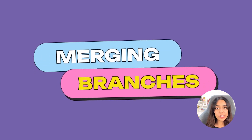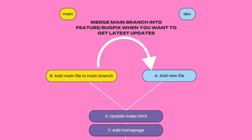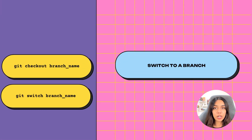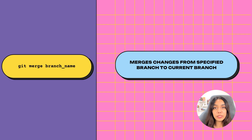Now let's look at how to merge a branch into another. Since main is your source of truth where you push completed features and bug fixes, we'll merge the dev branch into main and not the other way around. Sometimes you'll also merge main back into your feature branch — for example, if a bug fix was pushed to main, your friend working on a feature branch can pull those latest changes into their branch. To merge, switch to the main branch using git checkout main or git switch main, then run git merge dev.